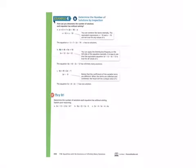Now take a look at example 4. In this example, we will determine the number of solutions for an equation by inspection. Part A shows us an equation that can be simplified by combining like terms. As you can see, once those like terms are combined, x plus 10 does not ever equal x minus 10. Therefore, the equation x plus 3 plus 7 equals 2x minus 10 minus x has no solutions.